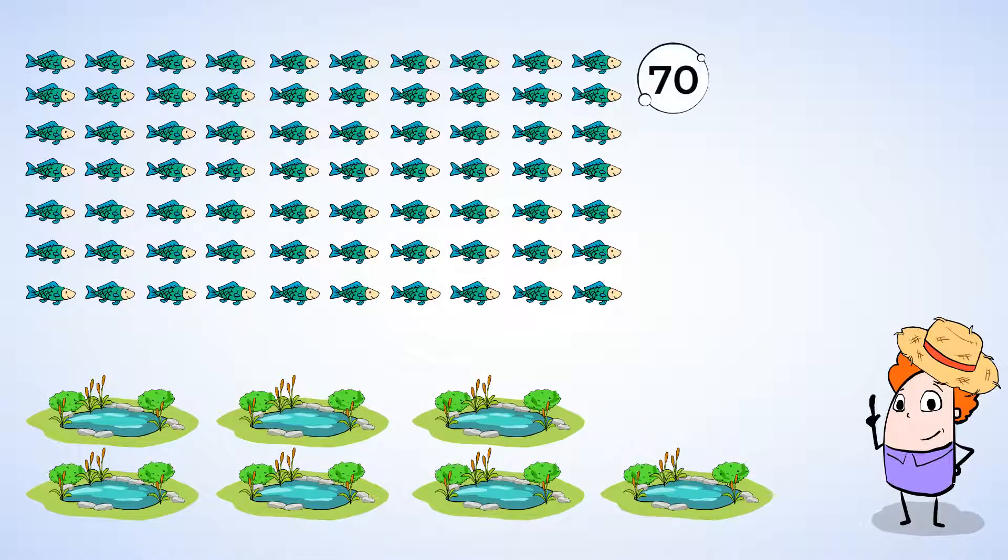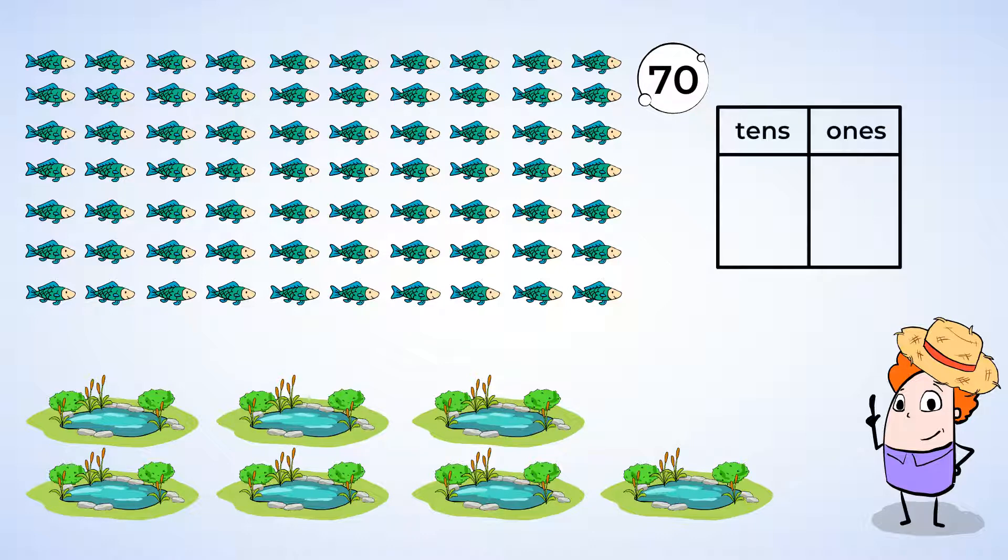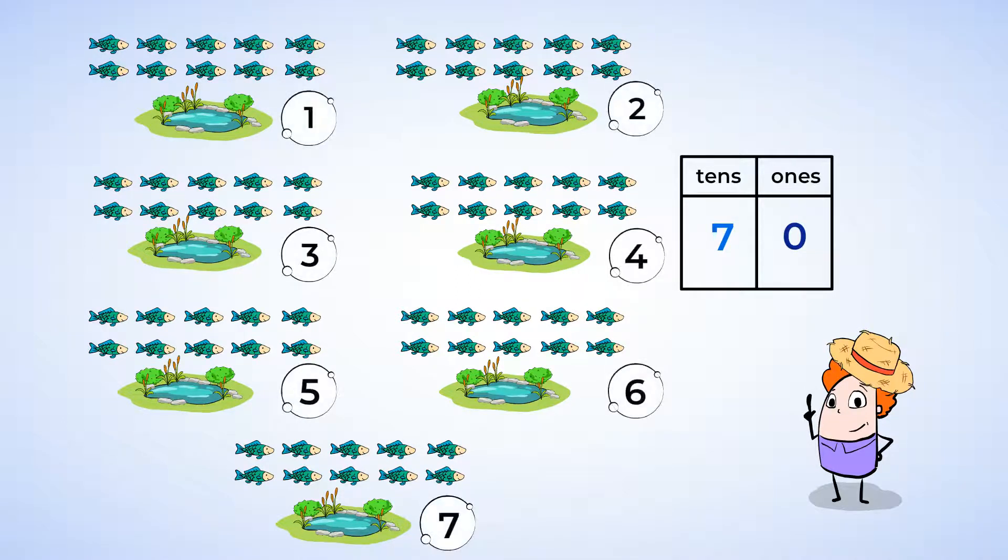We've got 70 fish and we need to put them into ponds. And we need to put 10 fish into each fish pond. Now to do this, we need to make groups of 10. Well, how many 10s are there in the number 70? A place value chart can help us find out. Let's write the number 70 in the place value chart. The 7 goes in the 10s place. And the 0 goes in the 1s place. Which number shows us how many 10s there are? Because this is a 10s place, we should read the number here, 7. And so there are 7 10s in the number 70.